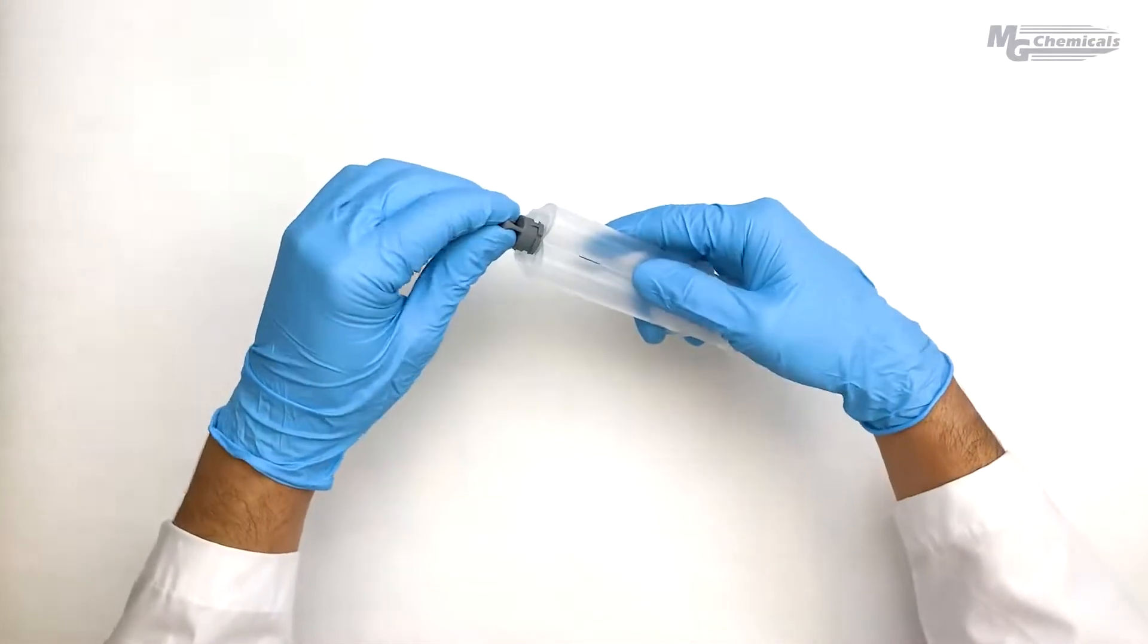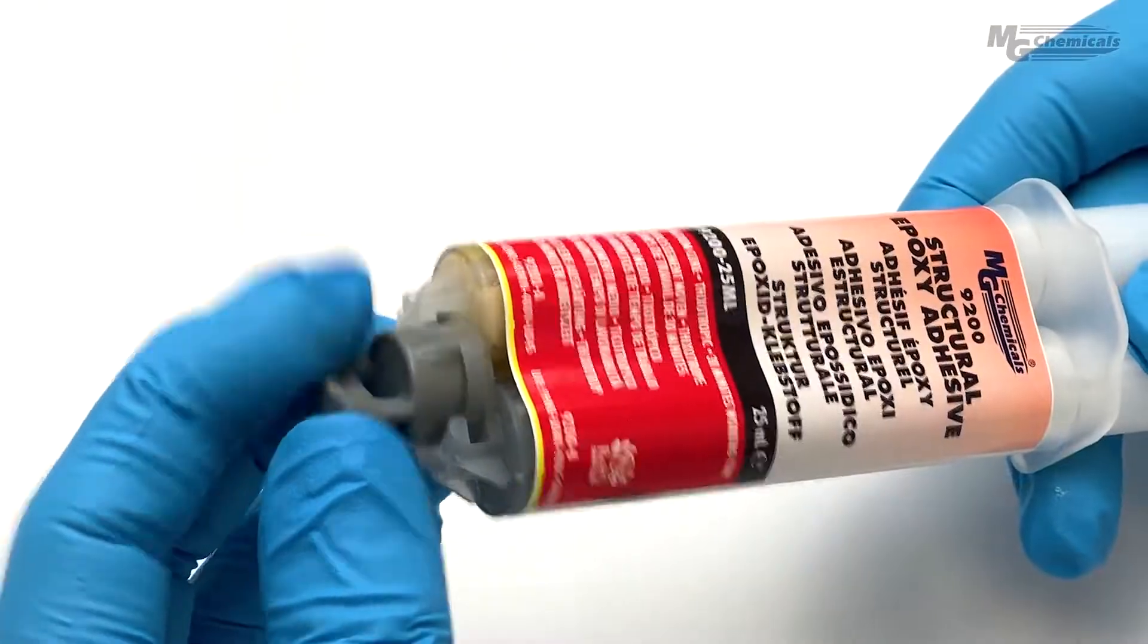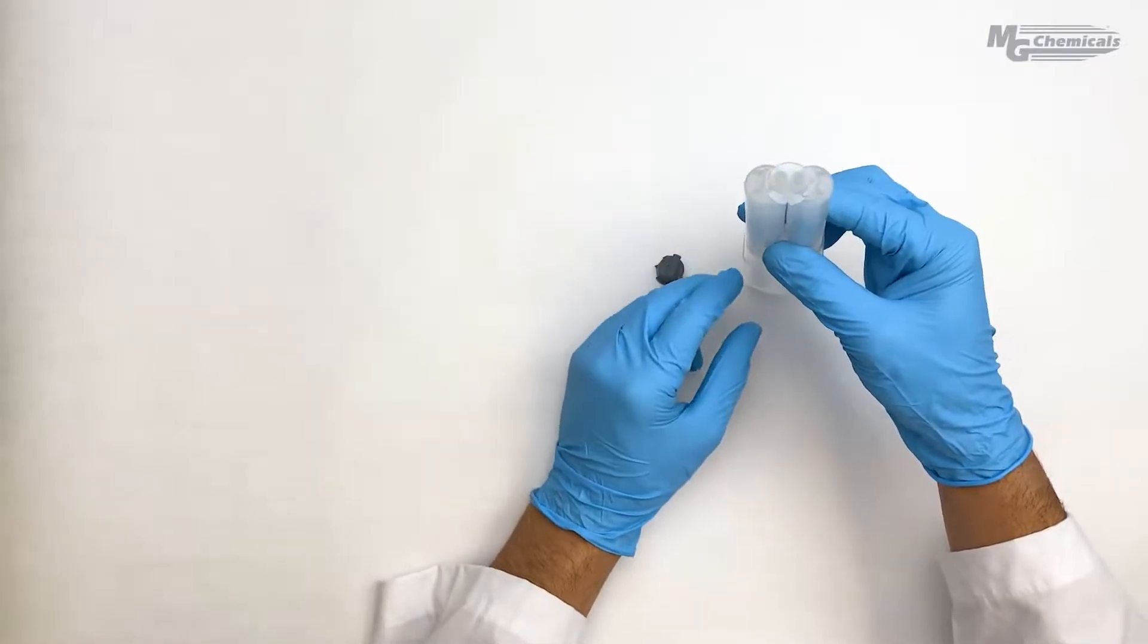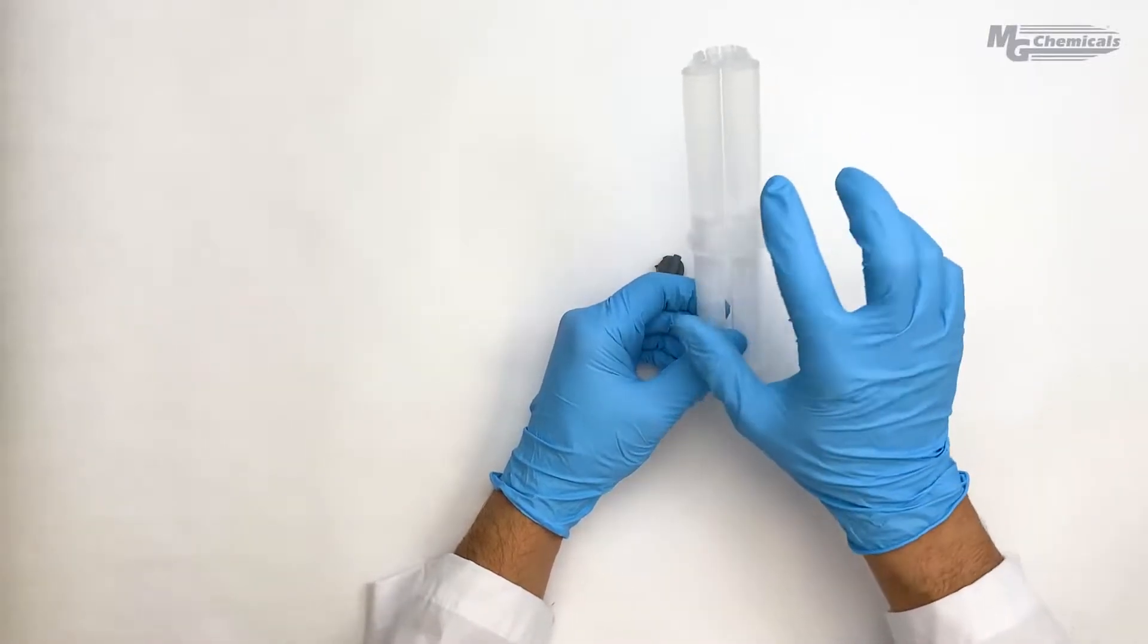Start by removing the lure lock cap to open the nozzles. This packaging is used both for adhesives and potting compounds in one-to-one mix ratios.